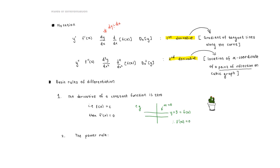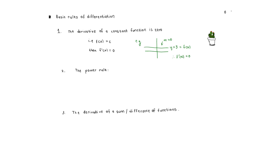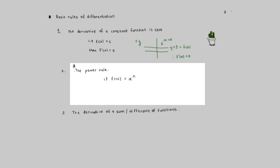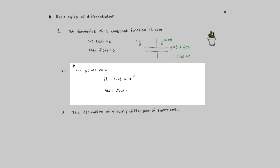The second rule is the power rule, which is used for terms in the form x to some exponent — and this is the rule we are going to use the most. We rewrite all terms in our expression as x to some exponent, then take the derivative: f prime of x equals n times x to the exponent n minus one.